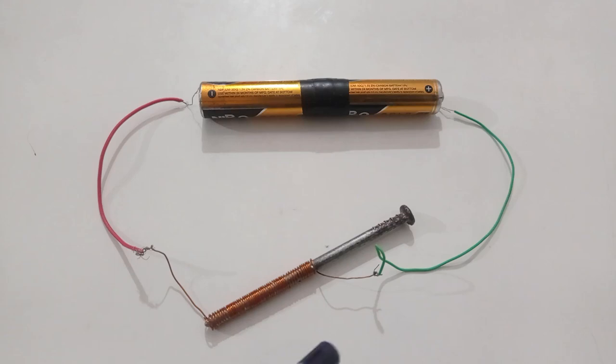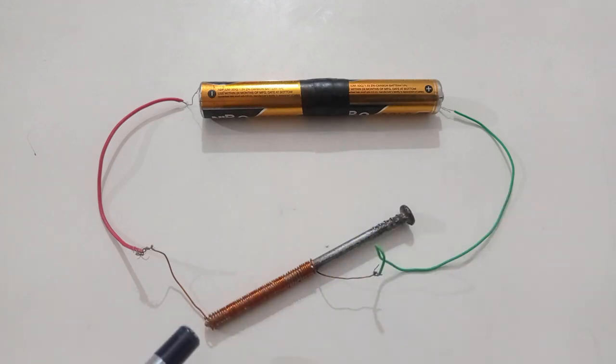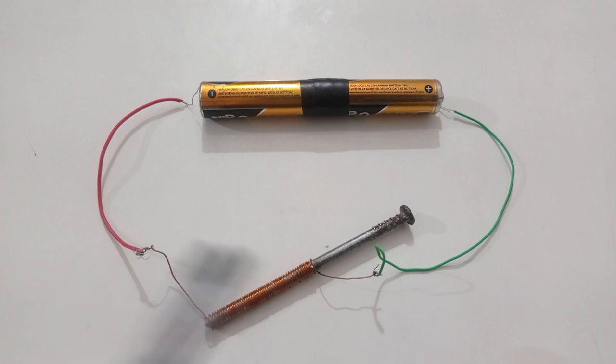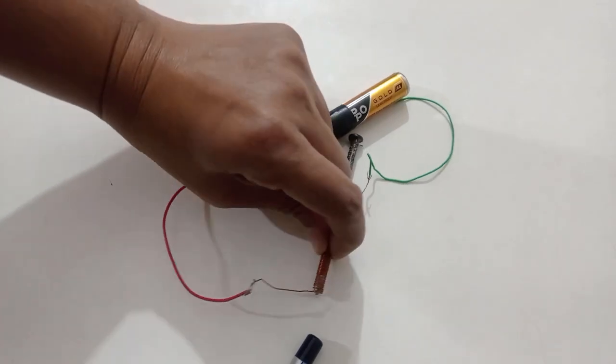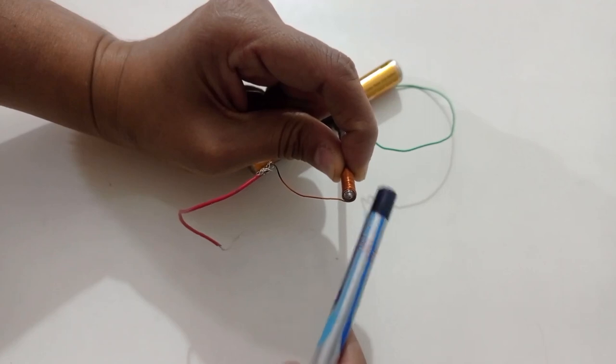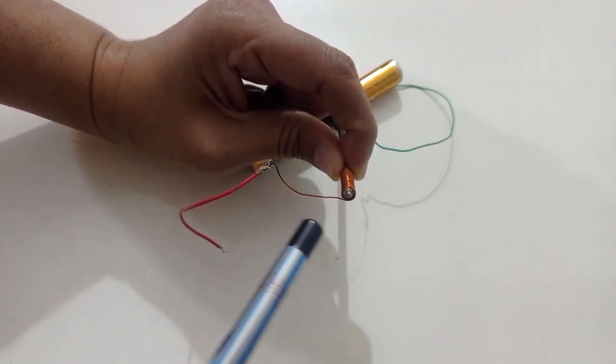If we look at an electromagnet, this end will be connected to positive terminal of battery and this end will be connected to negative terminal, which makes the flow of current in this direction. If we look at the face of the coil, current will be flowing in clockwise direction. So, this should be the south pole of our magnet.